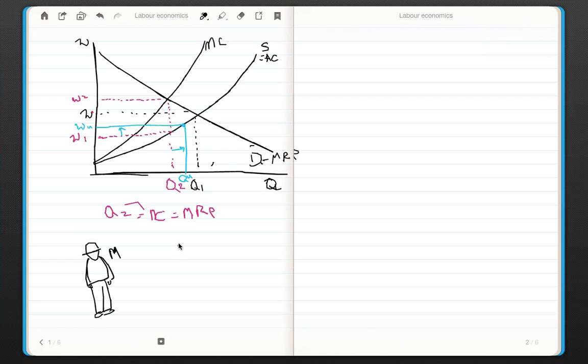So, M, the monopsonist, is going to push down the wage rates. And this is the kind of industry where we've got lots of people trying to get work. I'm just trying to stick people because I'm going to draw two, three of these.